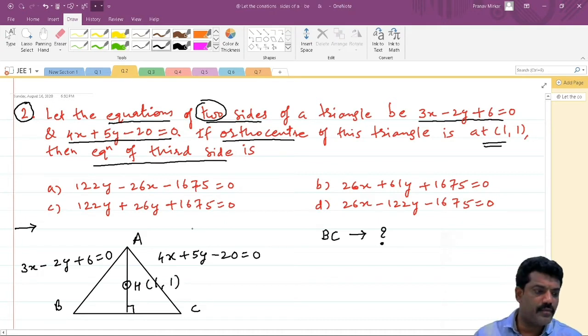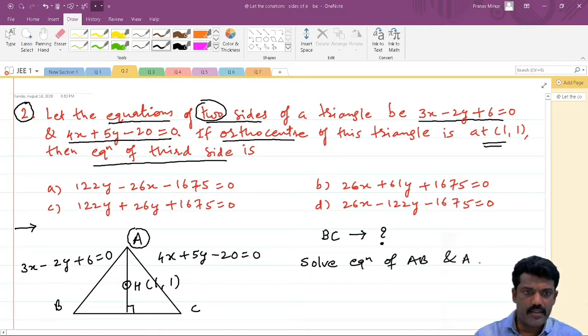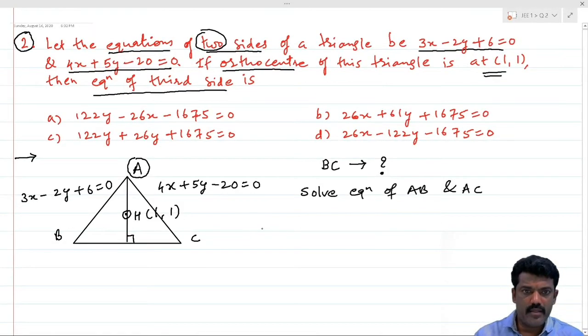So I have to find the equation of BC. For that I will find the coordinates of point A. To find the coordinates of point A we will solve equation of AB and AC.